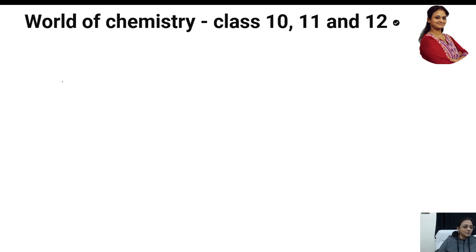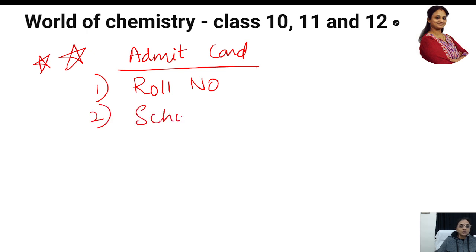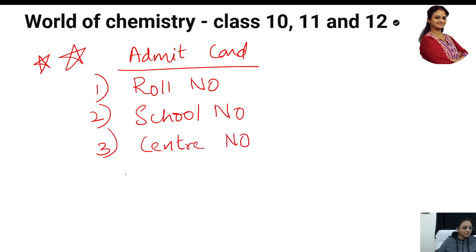Most important thing: your admit card. Now I am going to tell you in detail about how to fill. First of all, your admit card is going to have a lot of details. Your admit card will have your roll number — that is a unique number every student has. Your admit card also has your school number, which is also unique. Your admit card also has something called a center number.